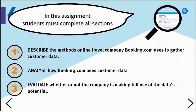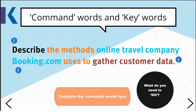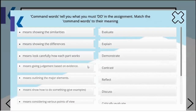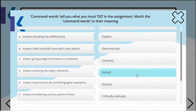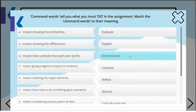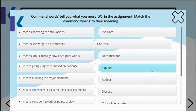What you should look out for in particular are command words like describe, analyse, and evaluate — really think about what those mean. There is a quiz linked at the end of the video where you can practise. These command words — such as evaluate, explain, demonstrate, and contrast — all have slightly different meanings. For example, contrast means to show the differences. Have a go at that quiz at the end of this tutorial.